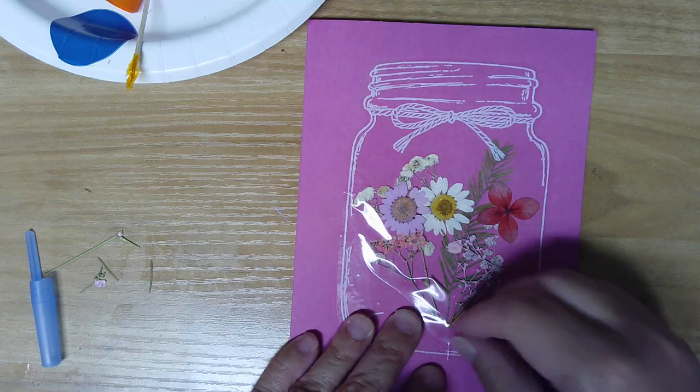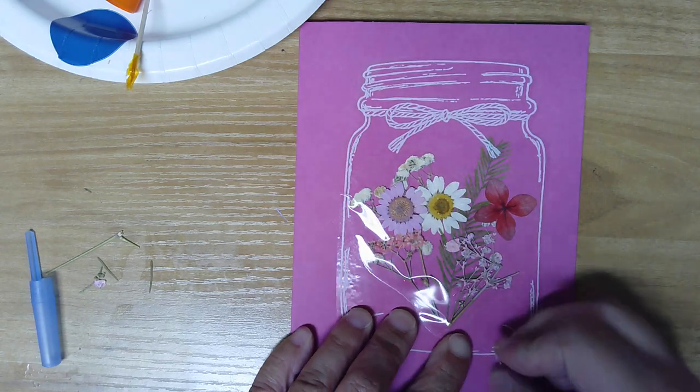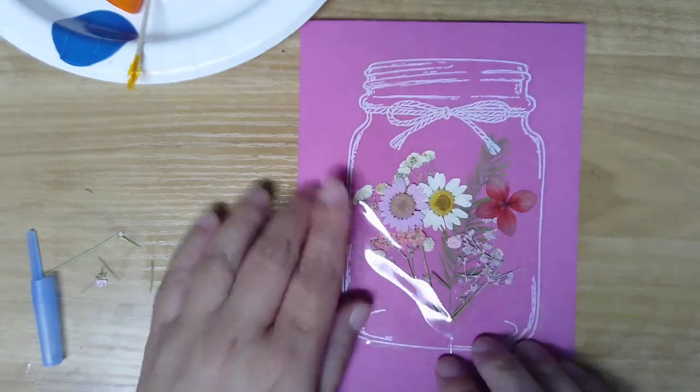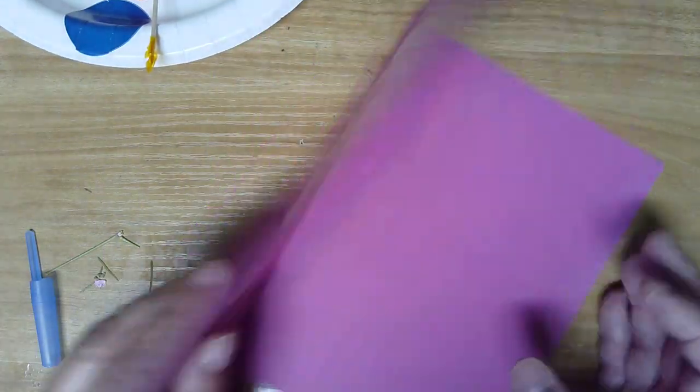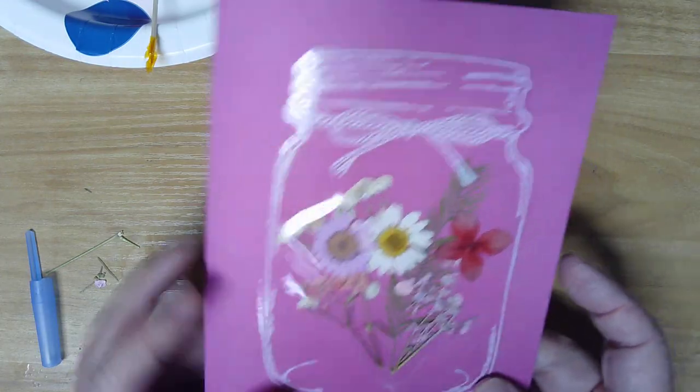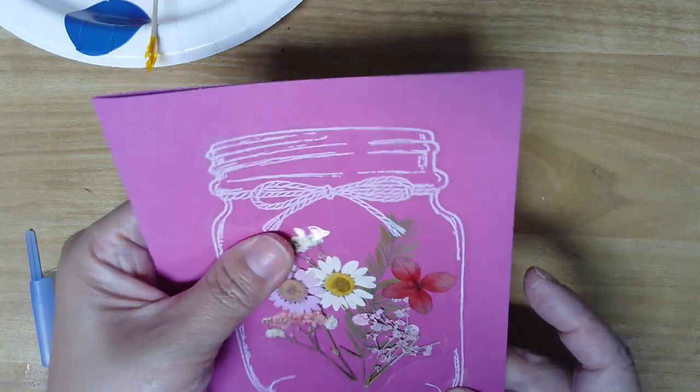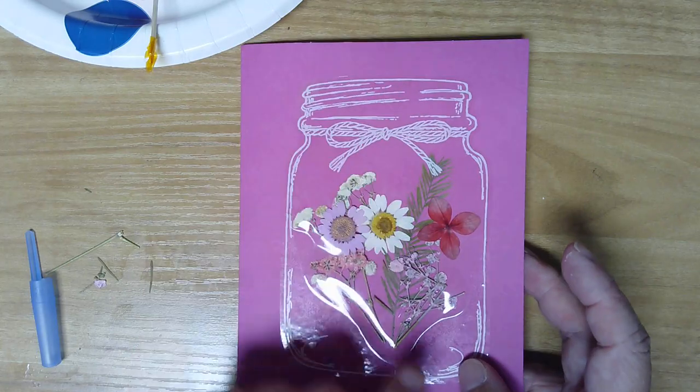And put it down and just gently press out any big air bubbles. And if you've got a really thick bunch of flowers, it might be kind of hard to press down, but I think I got it. So there is your card. And so this sticker just protects it. You can give it to somebody, send it to somebody and not worry about the flowers coming off.